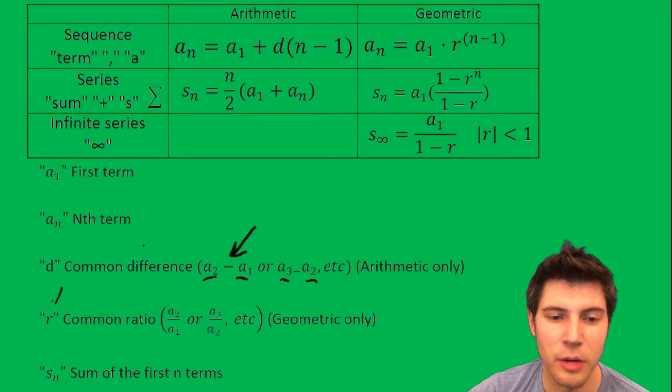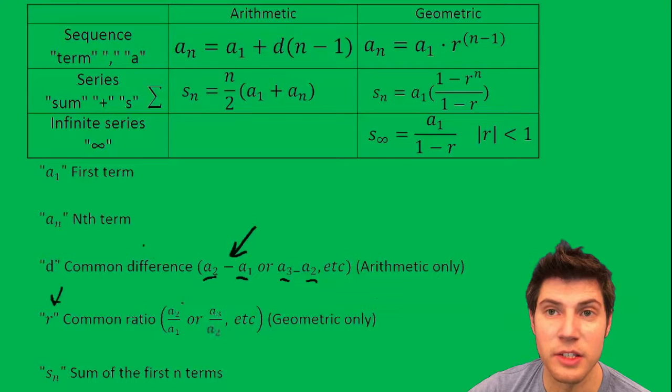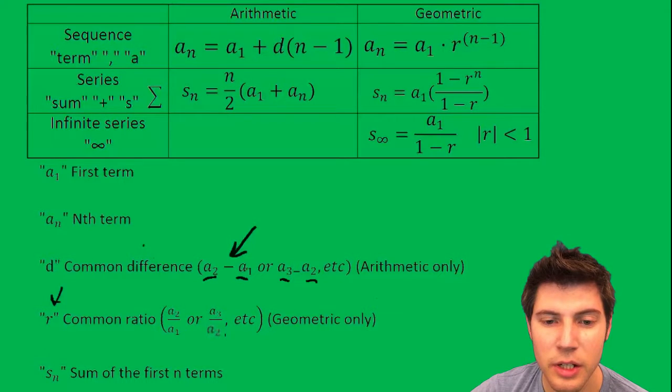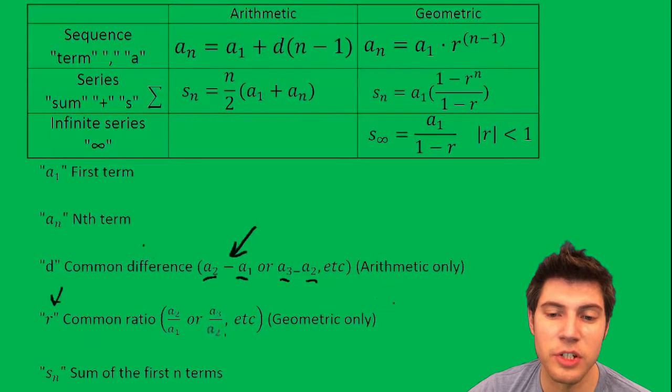And then r is the common ratio. That's the second term divided by the first term, or the third term divided by the second term, etc. And that's for geometric only.